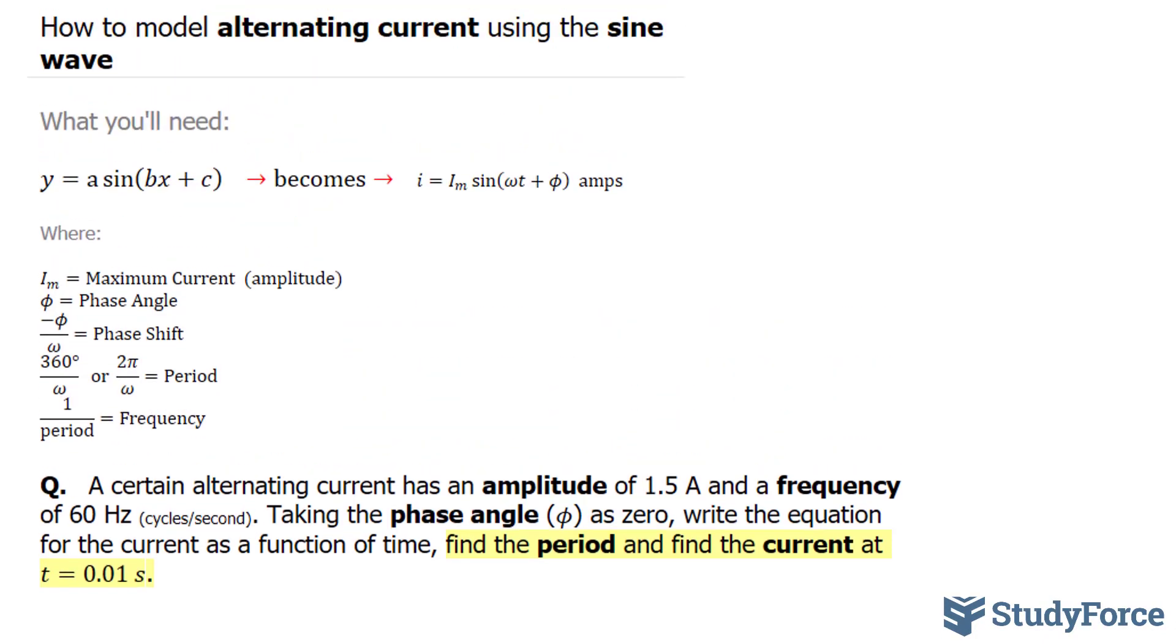Let's start off by writing out this function. i is equal to the maximum current. In our case, the amplitude is 1.5, so the maximum current is 1.5. We have sine omega t plus phi. Now we're also told that the phase angle, which is represented by this symbol, is zero. So let's make a note of that. That is equal to zero.